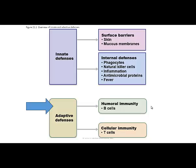So now we're going to talk about the adaptive defenses. This division of the immune system is very specific, and it is specific to cells that are maybe cancerous cells or virus-infected cells.